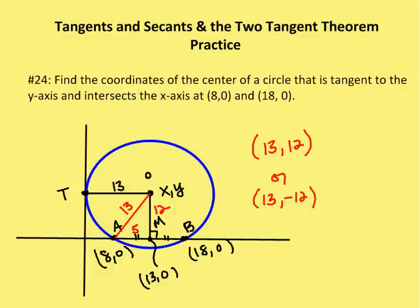So if you've got 13, 12, that's fine. 13, negative 12 is also fine. 13, negative 12 again comes if you move the circle downwards so that it still intersects at 8, 0, but now the center of the circle shifts below the x-axis.